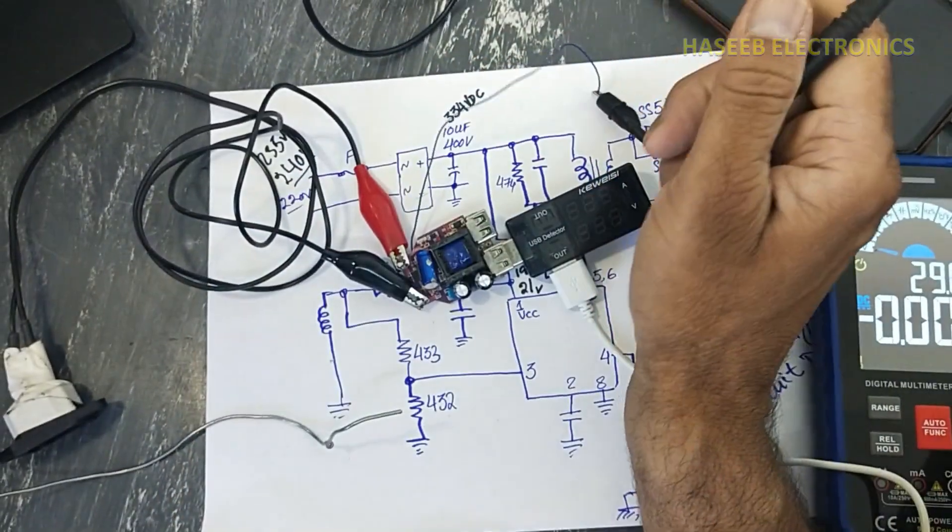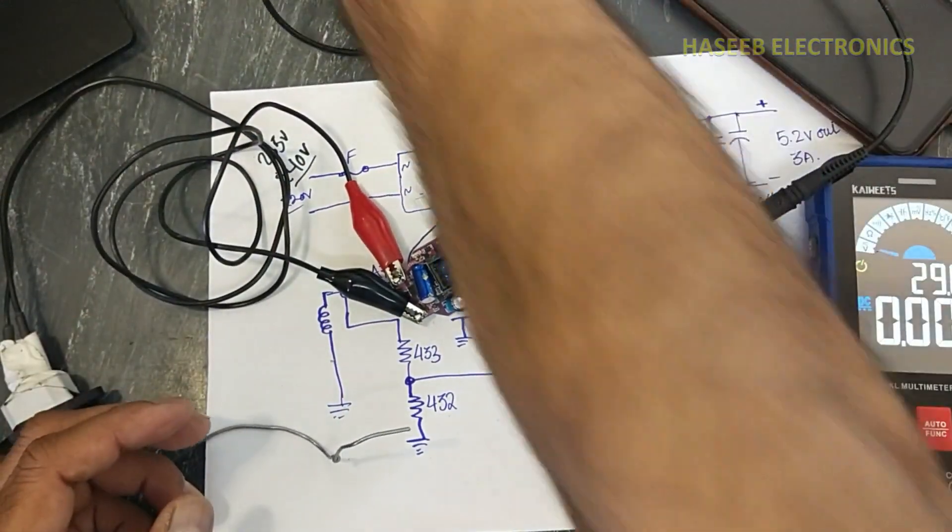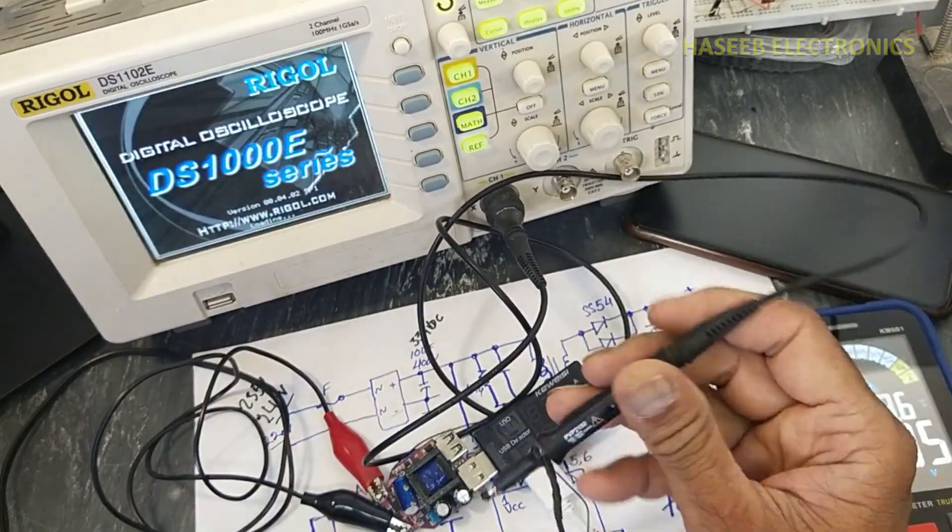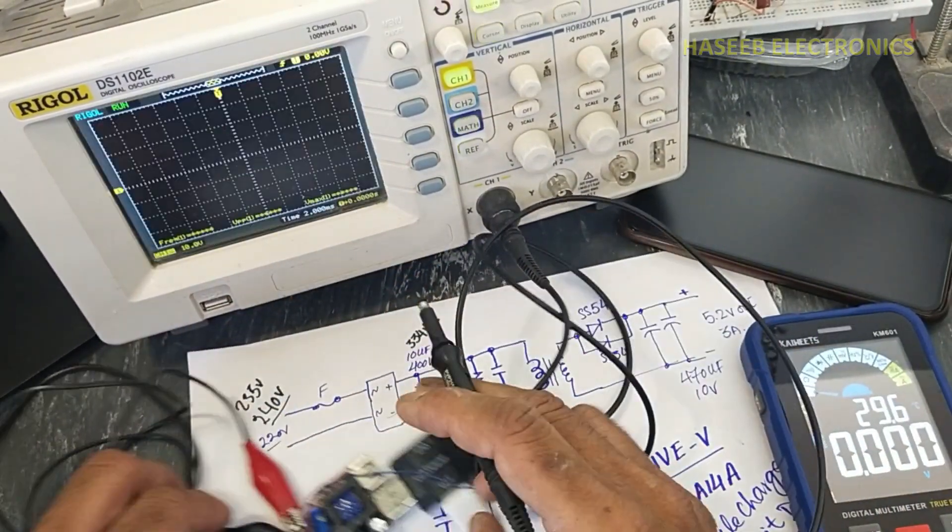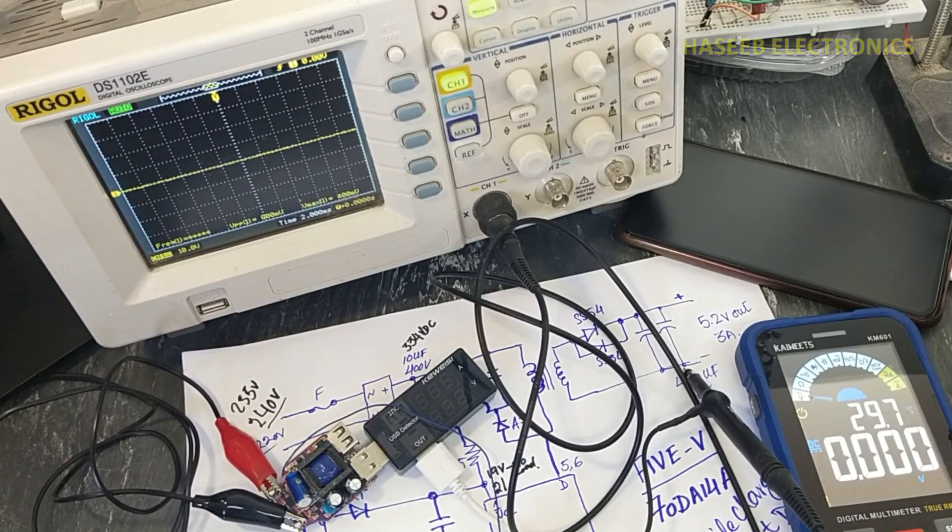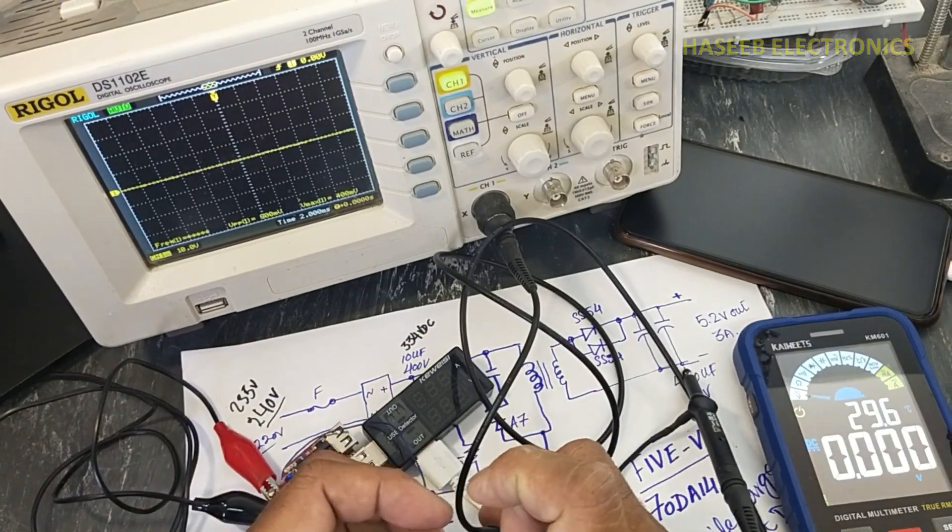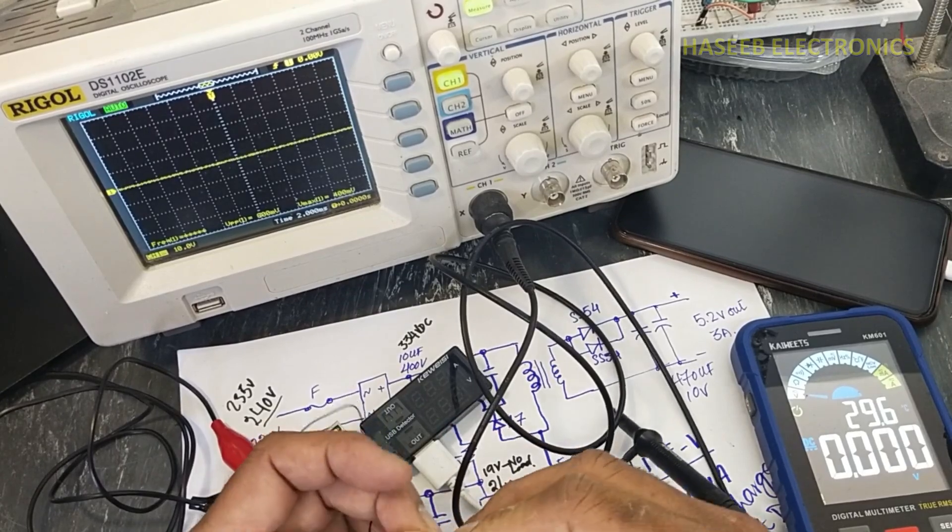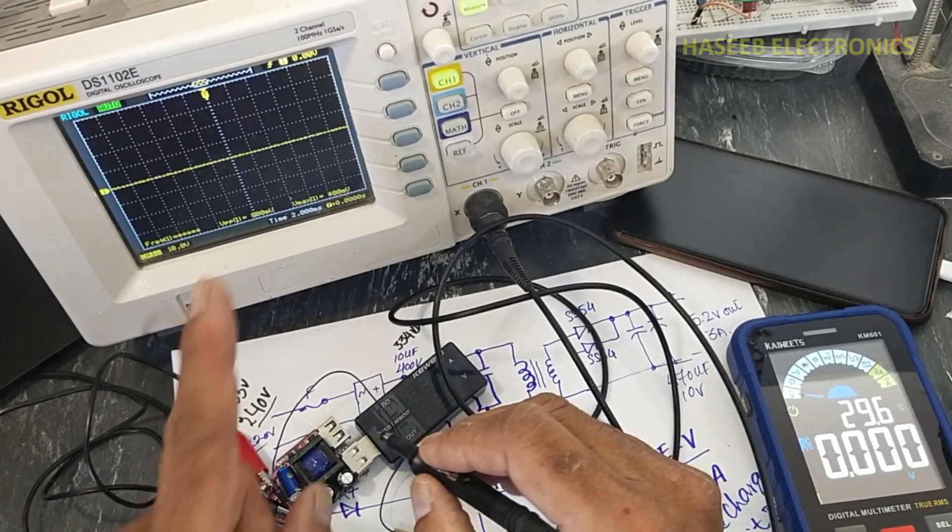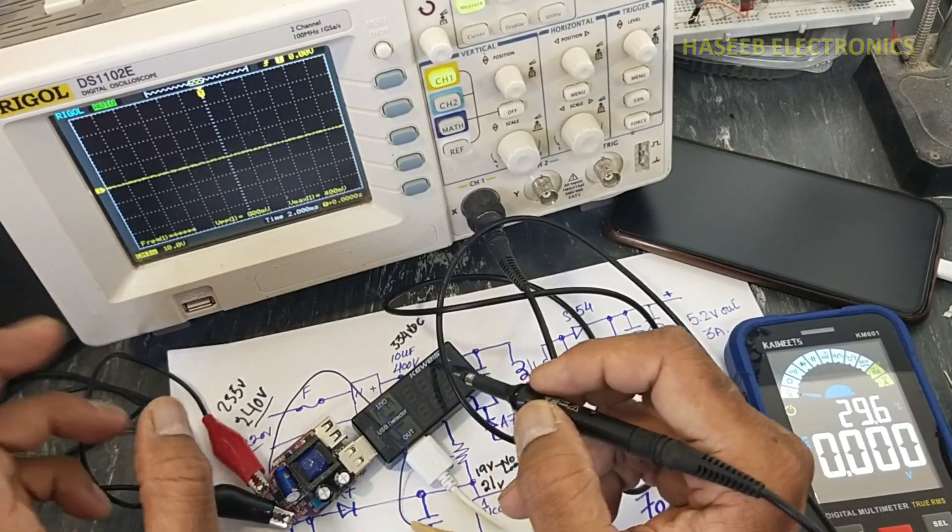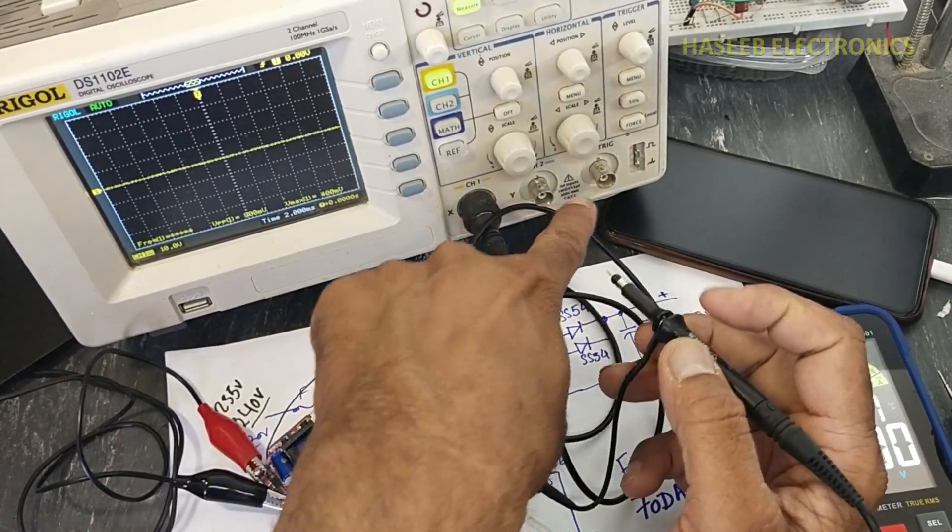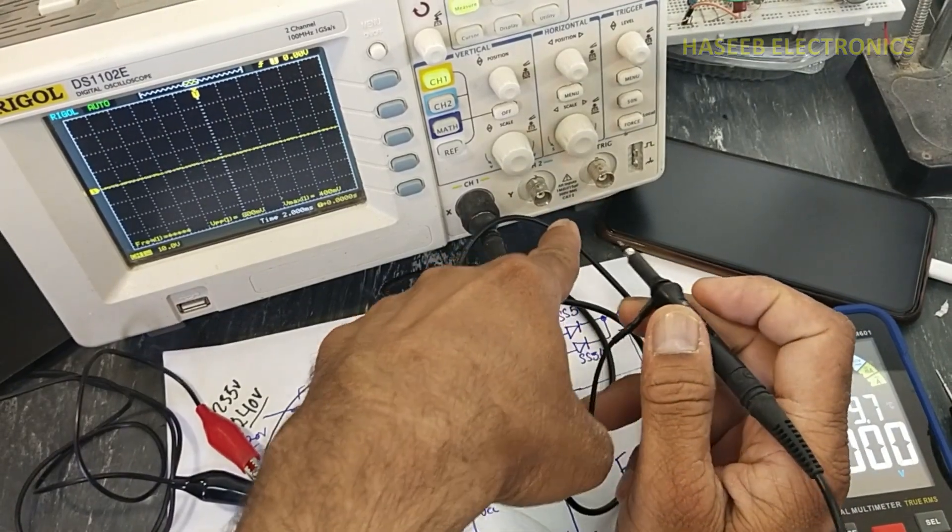When you are using oscilloscope, always try to use isolation transformer or use battery powered oscilloscope. When we are testing live voltage, never touch this metallic connector. If you don't have isolation transformer, use battery powered oscilloscope or remove the grounding wire from the oscilloscope power connector. And while testing, never touch these metallic connectors because live voltage can appear in these connectors.